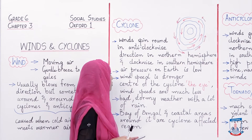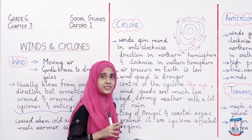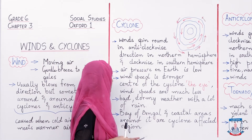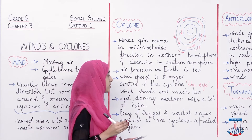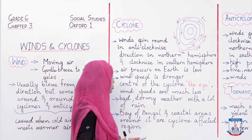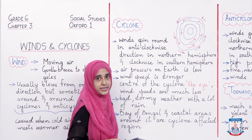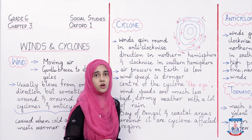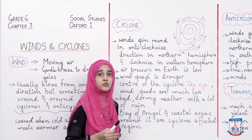In a cyclone, air pressure on Earth is low. Wind speed is stronger — joh hawa ka pressure aur uski speed hoti hai, that is stronger compared to an anti-cyclone. The center of the cyclone, called the eye, has much less wind speed. And when a cyclone starts, the weather turns bad and stormy, aur saath-saath baarish bhi ho jaati hai.